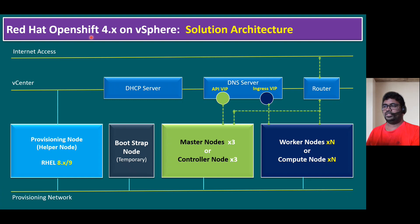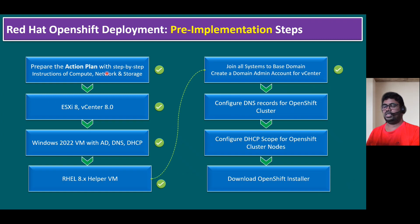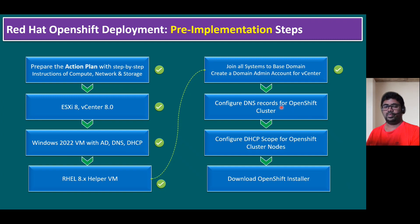Let's quickly recap our Red Hat OpenShift 4.x on vSphere solution architecture. As part of the architecture, we are now going to focus on the DNS server configuration. In our previous session, we already talked about the action plan, and we validated ESXi 8, vCenter 8, and we configured our Windows Server 2022 AD DNS and DHCP. We also have a Red Hat 8.x helper VM created, our vCenter system is joined to the domain, and we created a domain administrator account. Now I'm focusing on configuring DNS records for the OpenShift cluster.